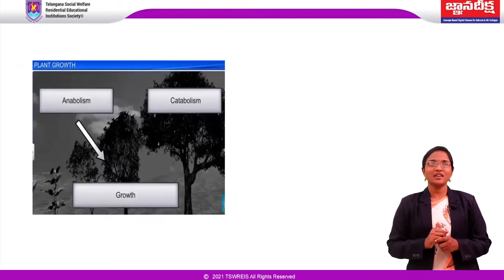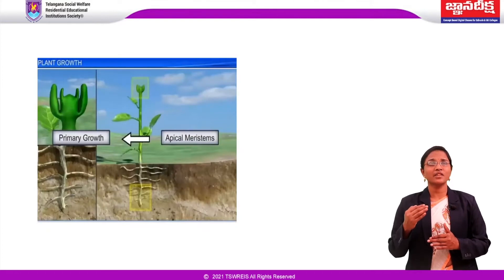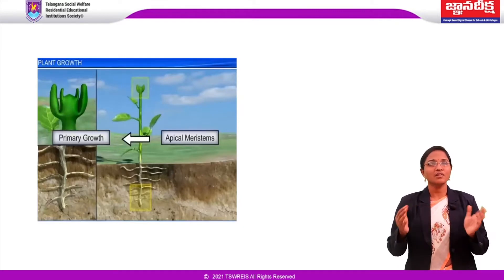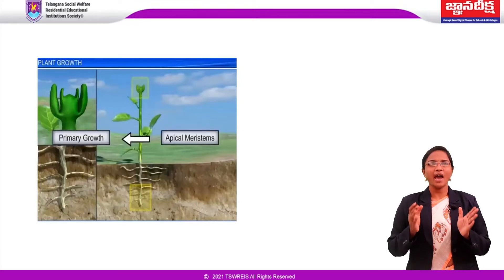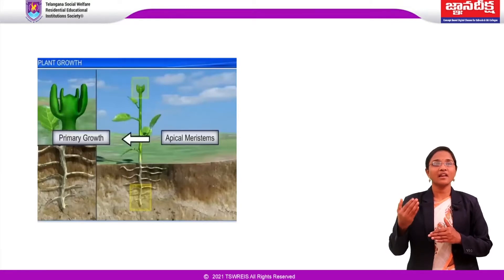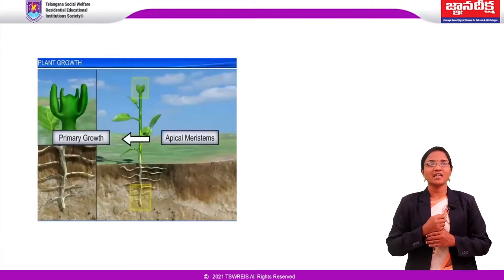In previous years you studied about the root apical meristem and the shoot apical meristem. They are responsible for the primary growth of the plant and contribute to the elongation of plants along their axis. In dicotyledonous plants and gymnosperms, the lateral meristem — vascular cambium and cork cambium — appear later in life and cause increase in the girth of the organ. This is known as secondary growth of the plant.